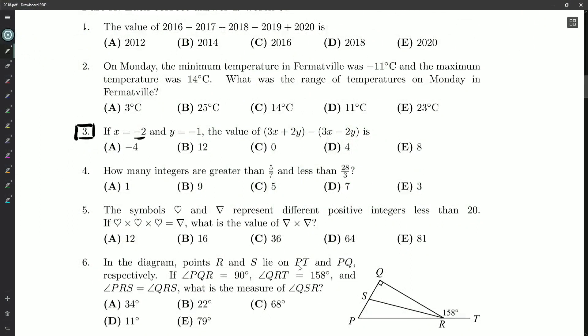If x is equal to negative 2 and y is equal to negative 1, the value of 3x plus 2y minus 3x minus 2y is.